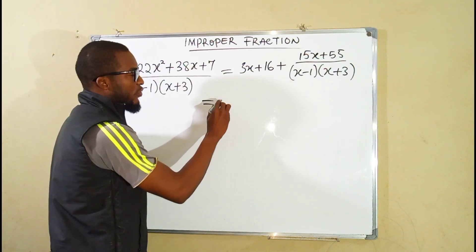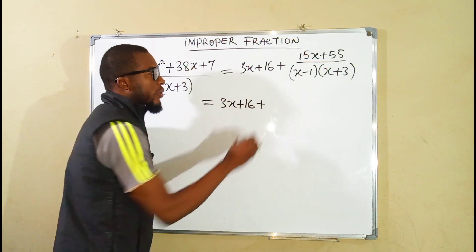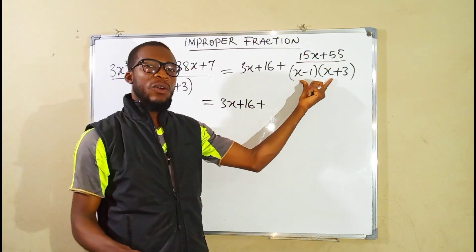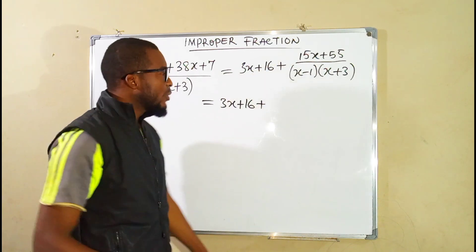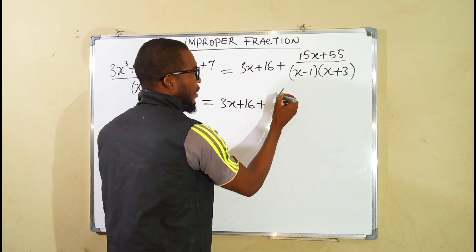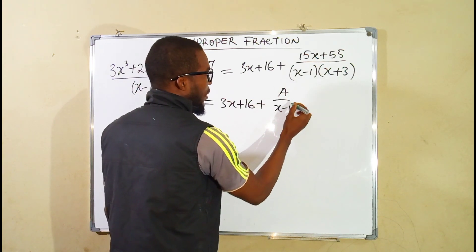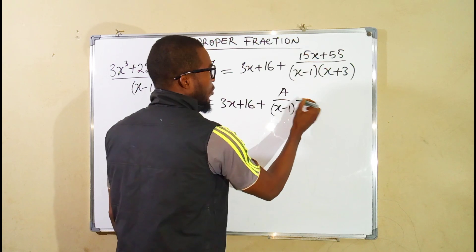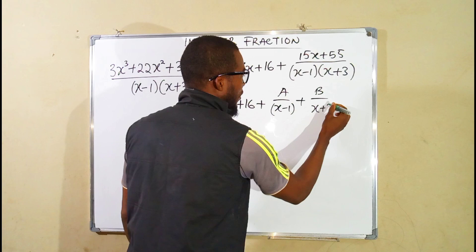So we can say this is equal to 3x plus 16. Then plus our factors. Our factors are all linear factors. So their corresponding numerators are going to be constant. So we have A over x minus 1. Then plus another constant B over the second factor x plus 3.